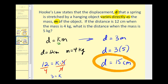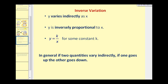Let's talk about indirect or inverse variation now. The following are equivalent for inverse variation: y varies indirectly as x, or y is inversely proportional to x, or y equals k divided by x for some constant k. In general, if two quantities vary indirectly, if one goes up, the other goes down, and vice versa. Let's take a look at a couple examples of this.